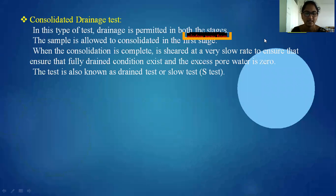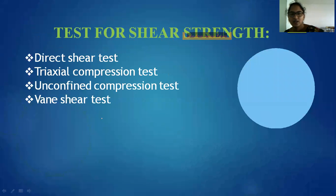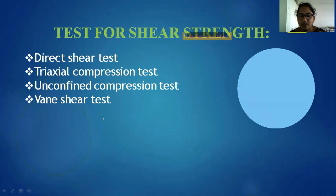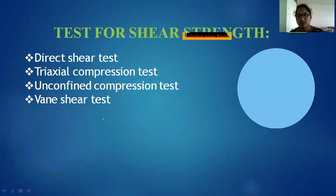So these are the three drainage conditions: consolidated drained test and consolidated undrained test — three points. Now, for different tests for shear strength conducted in our geotechnical engineering lab: Direct Shear Test, Vane Shear Test, Triaxial Compression Test, and Unconfined Compression Test. These are the four tests for shear strength.